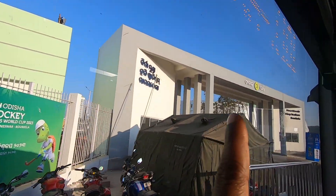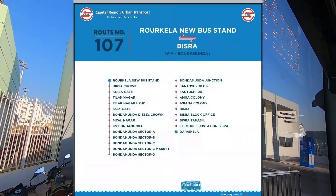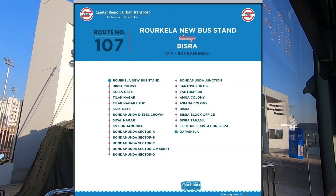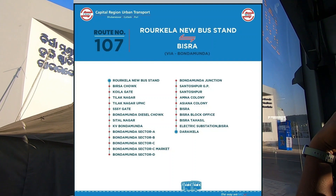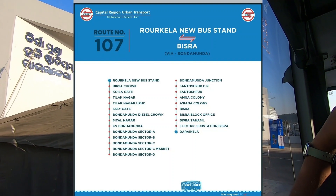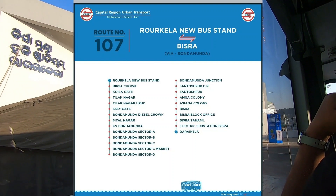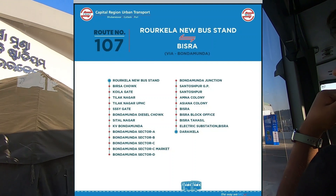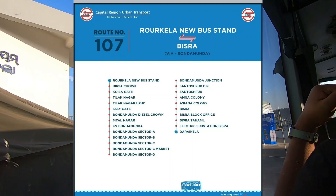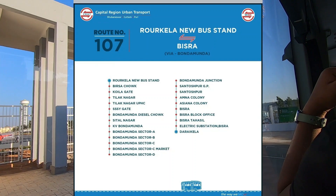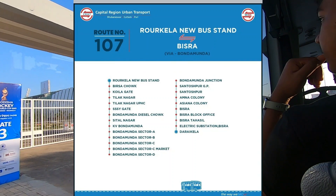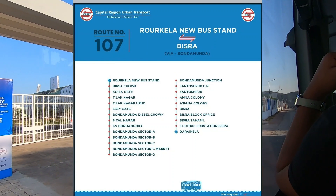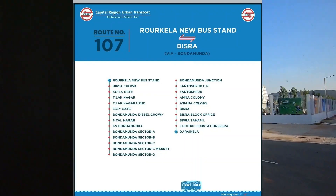Route number 107: Raurkela new bus stand to Bisra via Koyalagate, Tilak Nagar, Bondamunda, Diesel Chowk, Bondamunda Sector A, B, C, D, and Bondamunda Junction to Daraikal and back.